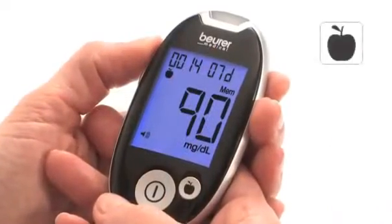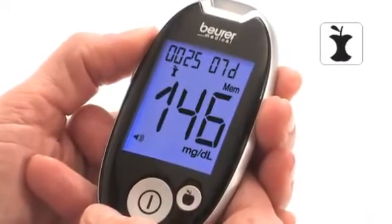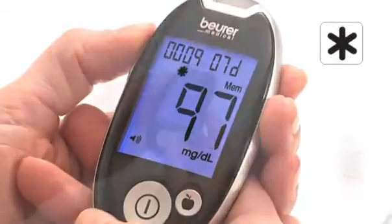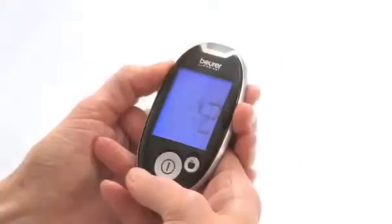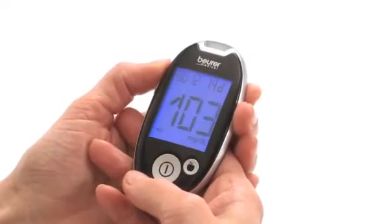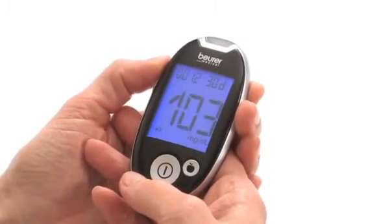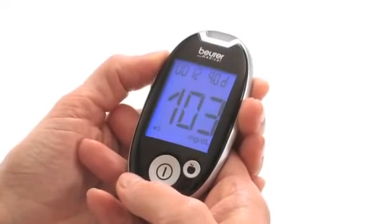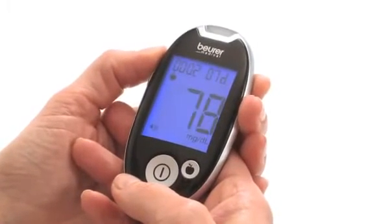The simple measurement marking for values before eating, after eating, or in general enables optimized management of diabetes. From the 480 saved values, the average blood glucose value can be calculated for 7, 14, 30, or 90 days for all measured values and unmarked values.